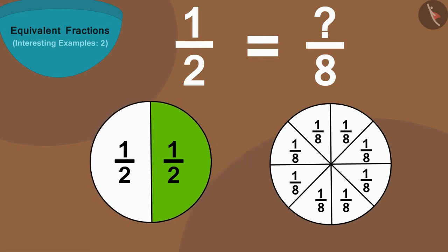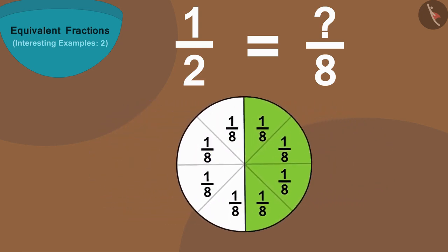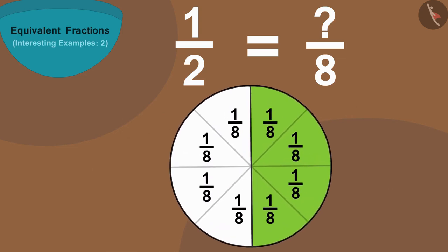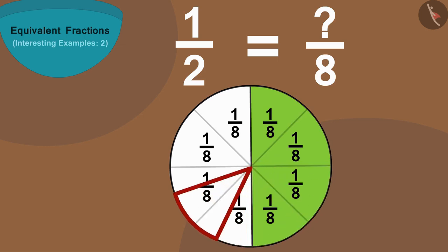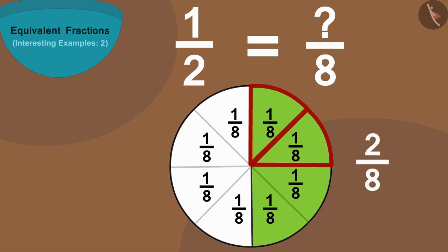If we put these on top of each other, then we can see that eight parts of this circle are equal to two parts of the first circle, and four parts of this circle is equal to one colored part of the first circle.